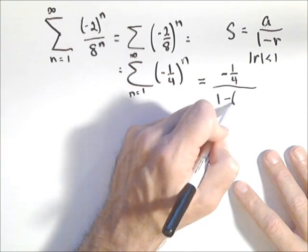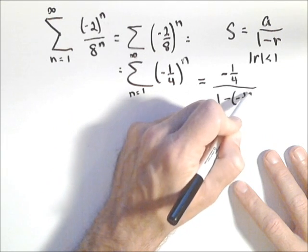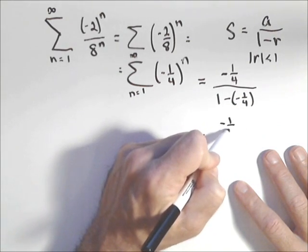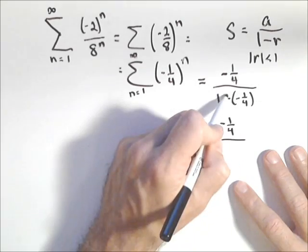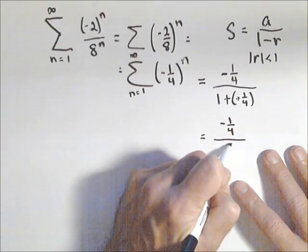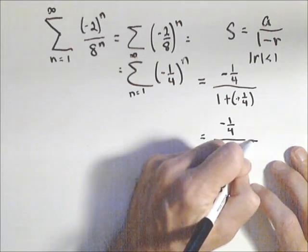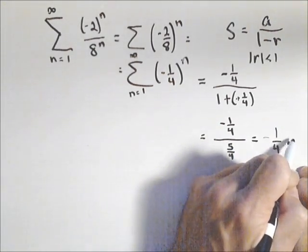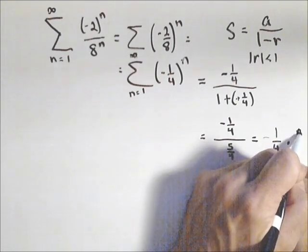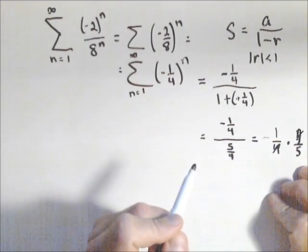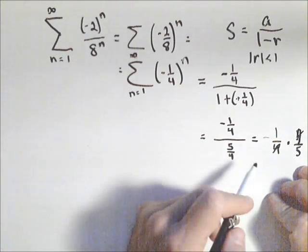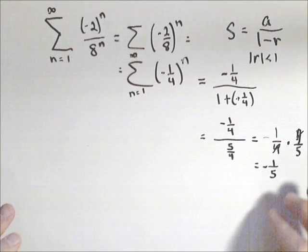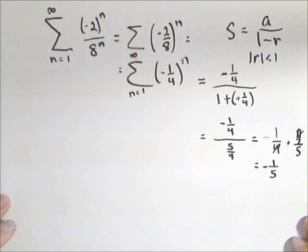Over one minus the common ratio, so negative one-fourth. I solve this, and I've got it. So negative one-fourth over, those will both go to positive, so that's gonna be over five-fourths, equals negative one-fourth times four-fifths. We're gonna flip and multiply. And so that gives us a negative one-fifth. So that's our sum there.